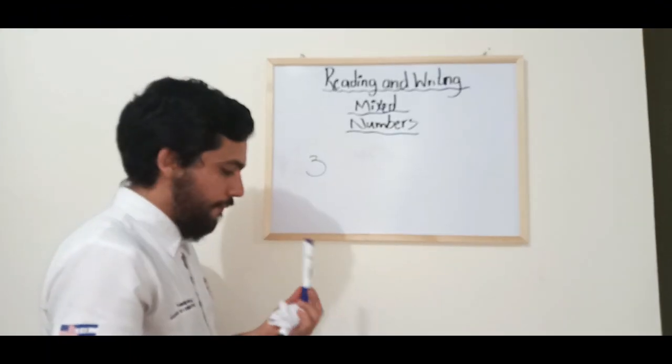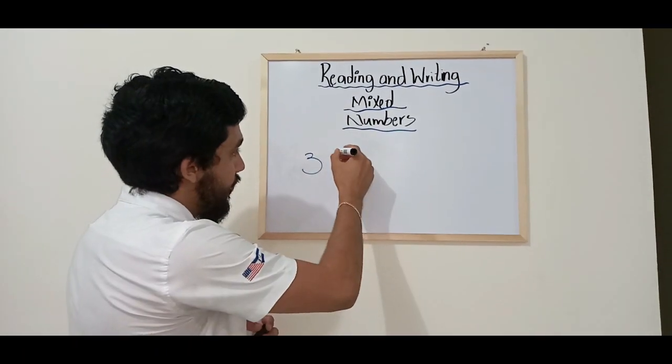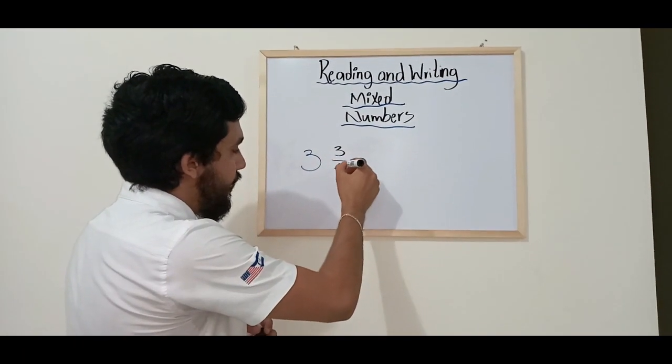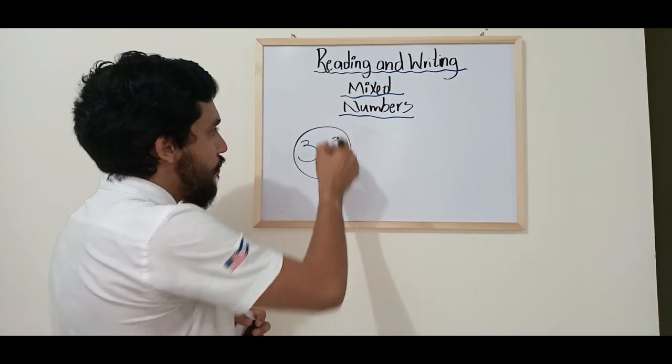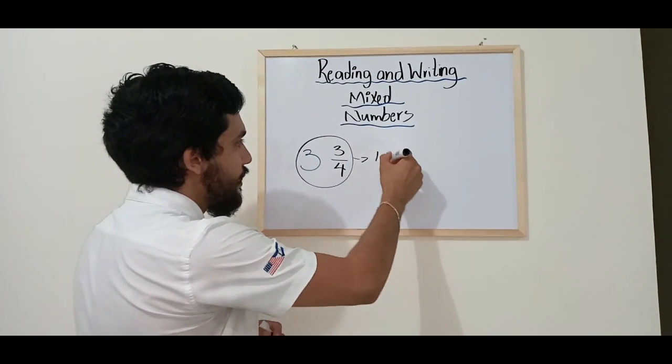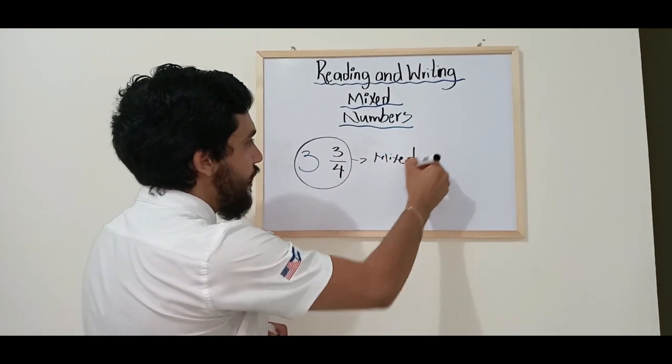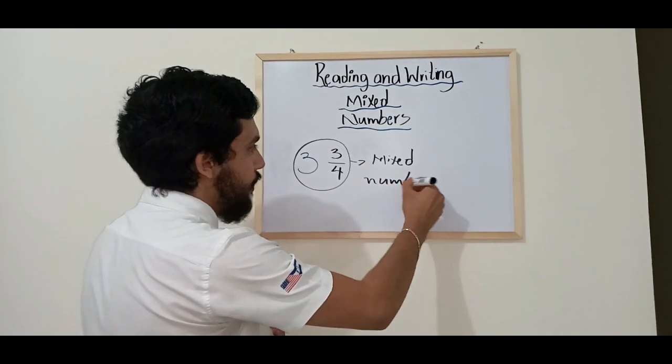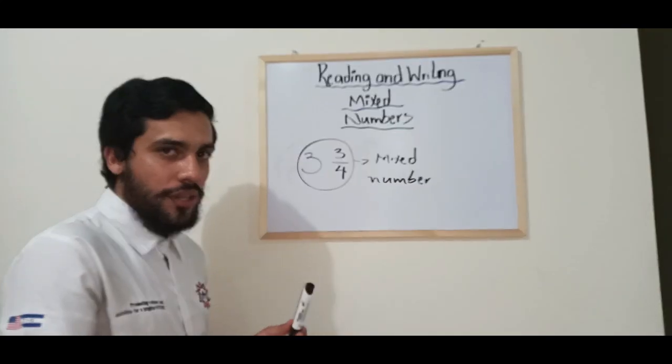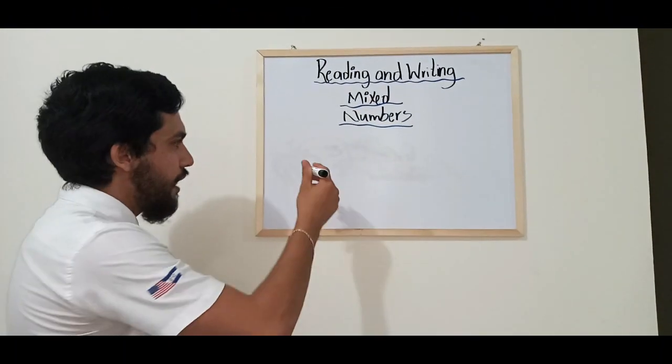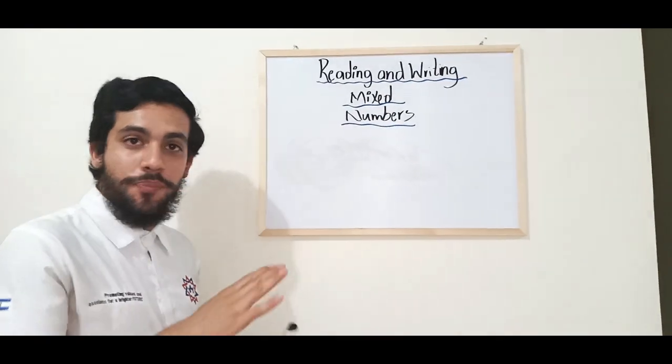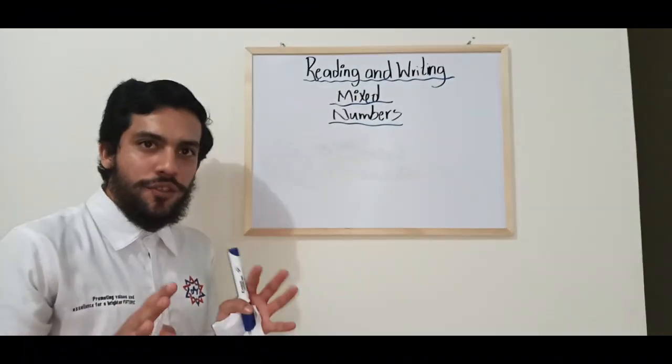A whole number and a fraction together - we say that this is a mixed number, right? Well, we perfectly know everything about mixed numbers. Let me explain then how to read them. Reading these numbers is pretty simple. This is what you have to do.